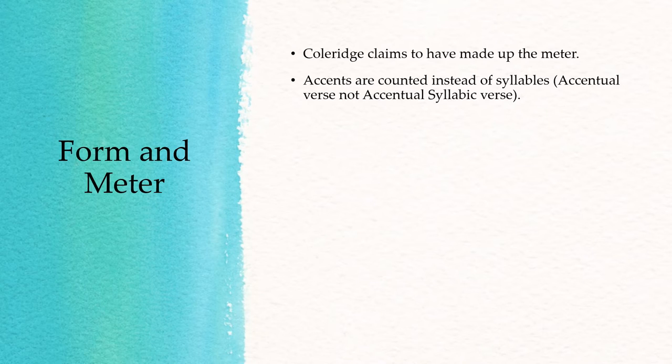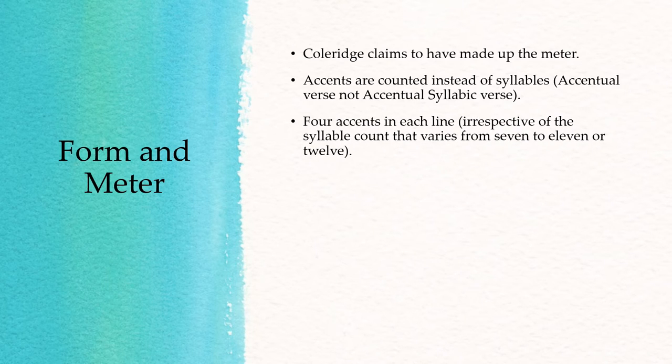The meter uses accentual verse rather than accentual syllabic verse. This means that accents are counted instead of syllables. Usually we count the number of syllables in each line to determine the meter, but in this poem Coleridge said you need to count the accents, that is word stresses, rather than the number of syllables. There are four accents in each line.